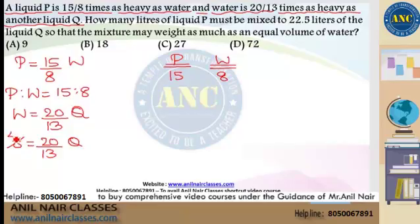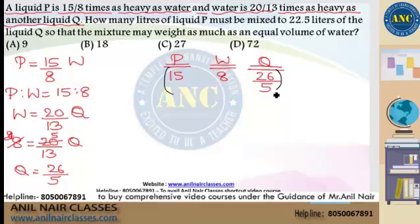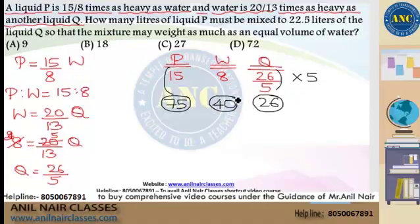Solving for Q: Q equals 26/5. Since I don't like fractional values, multiply everything by 5: 15 into 5 is 75, 8 into 5 is 40, and 26/5 into 5 is 26. So if P is 75, water W is 40, and Q is 26. The intermediate person W, which plays a role with both P and Q, has a value of 40.